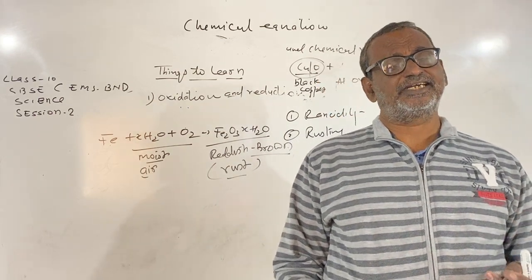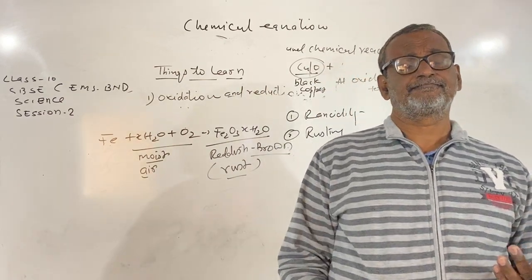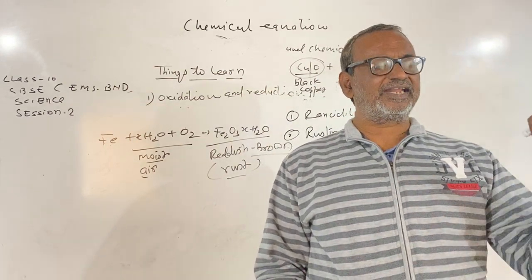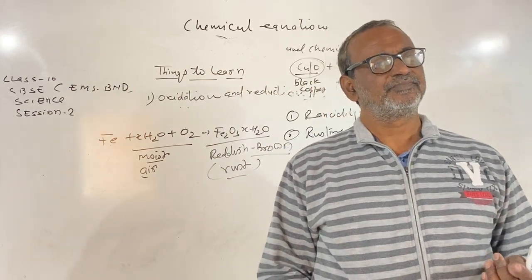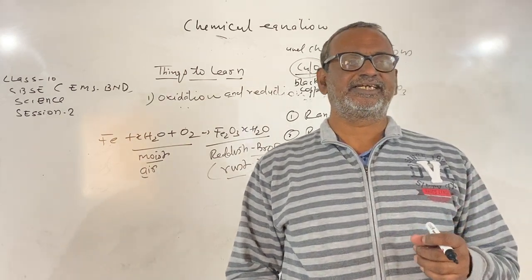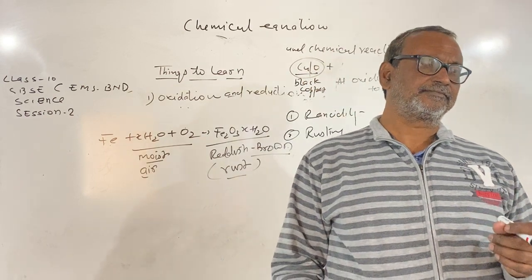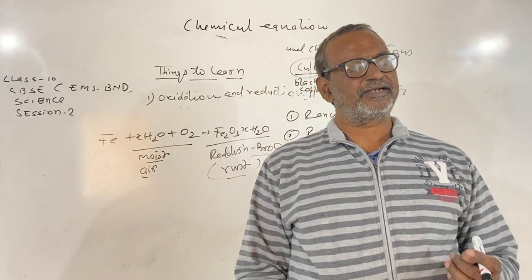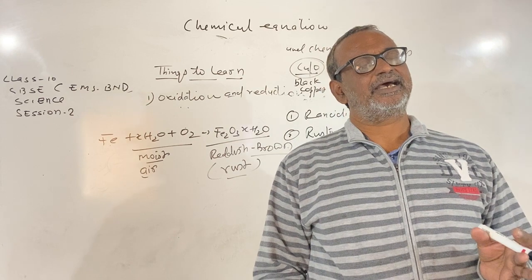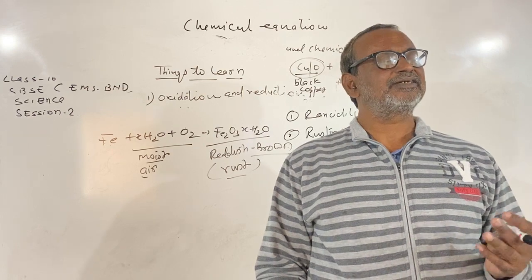Galvanization of iron sheets prevents rusting. In galvanization, the iron sheets are dipped in molten zinc so that a very thin layer of zinc is coated over the iron sheets. The galvanized iron sheets do not rust. Finally, rusting can be prevented by making an alloy like stainless steel, which is an alloy of iron, chromium, and nickel, and is rust-resistant.